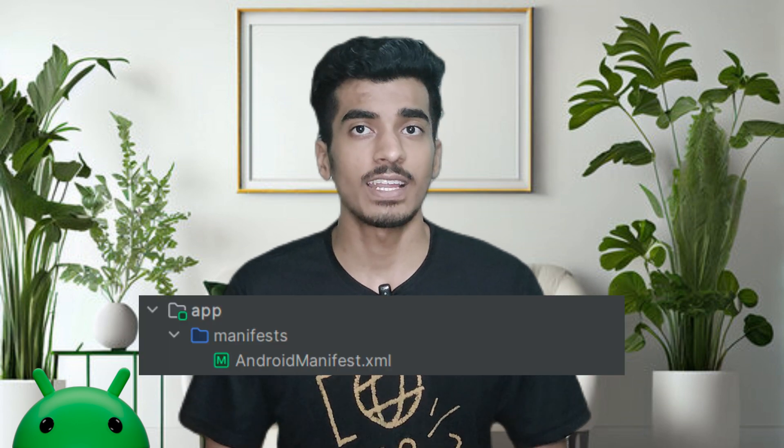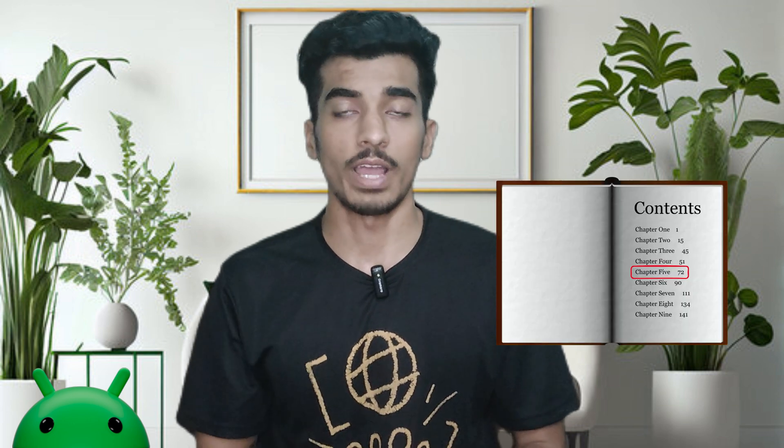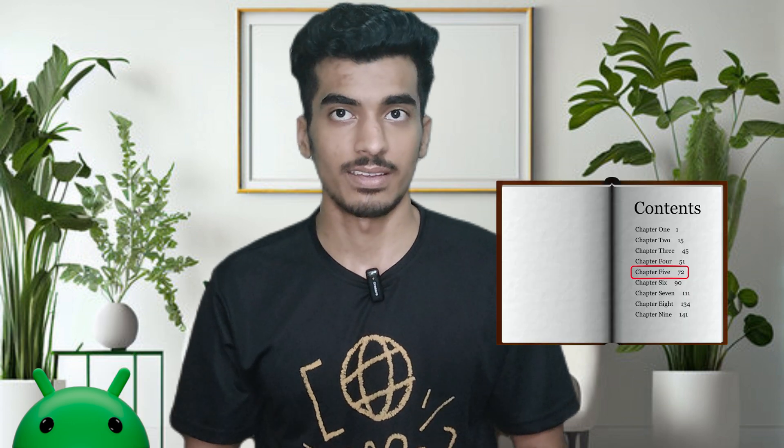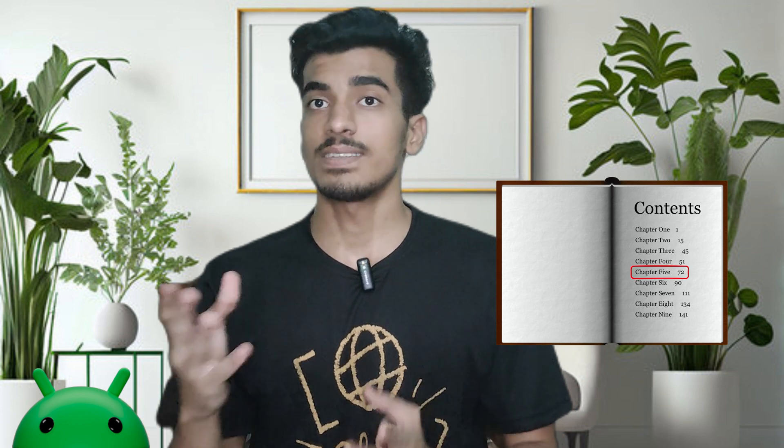You might have seen the AndroidManifest.xml file in every project that you create, and it is automatically generated by Android Studio. You can consider this file as the index page of a book, where the book is your application. All the required components of your application will be mentioned inside this index — the AndroidManifest.xml file — and this file will be used as the first interaction point for your operating system, build tools, and Google Play Services.